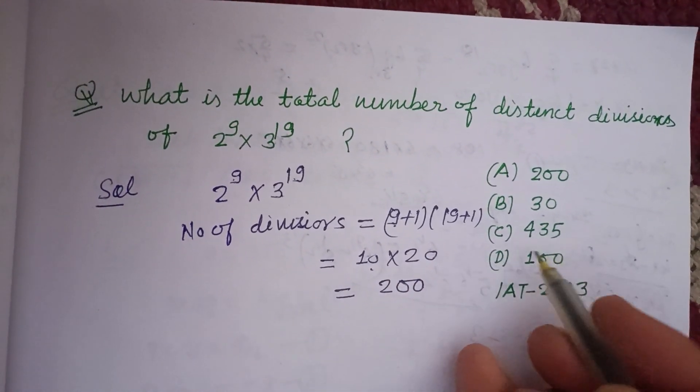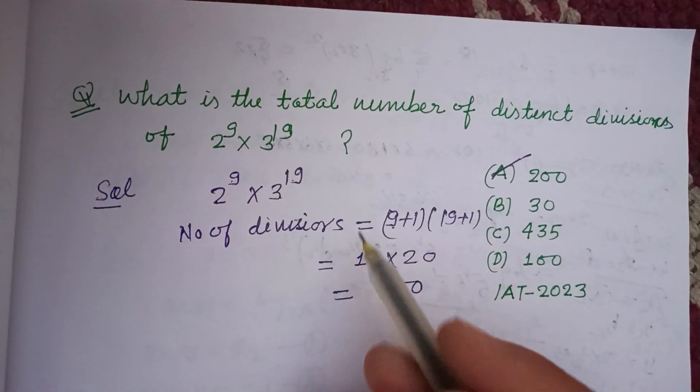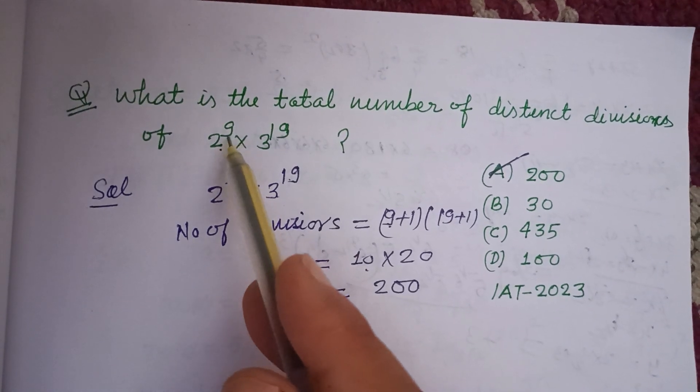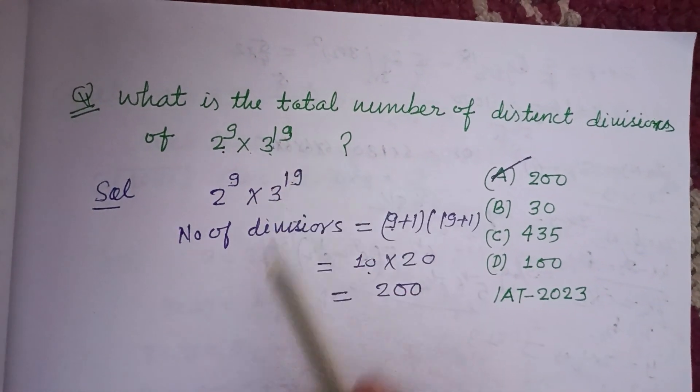200. So 200 is the number of divisors of the given 2 to the power 9 times 3 to the power 19.